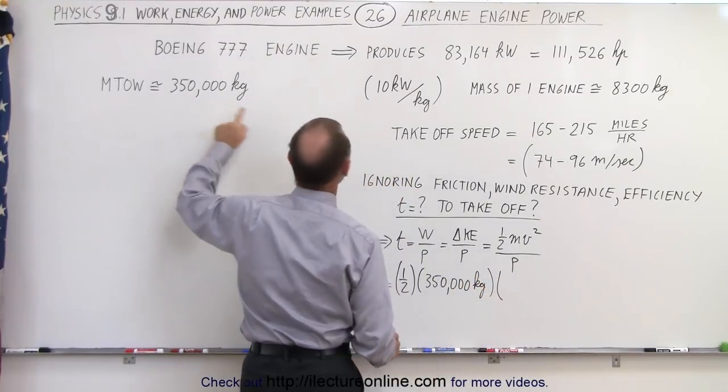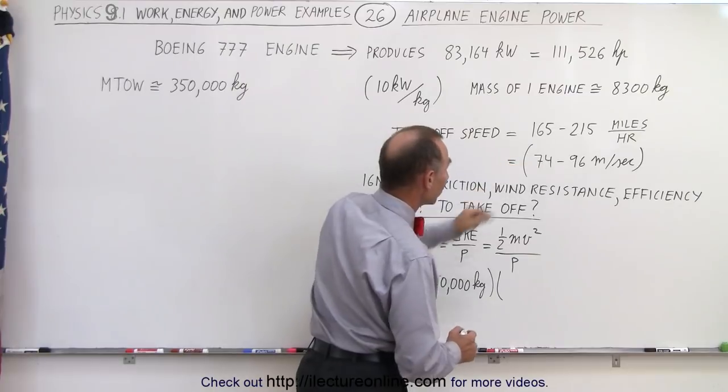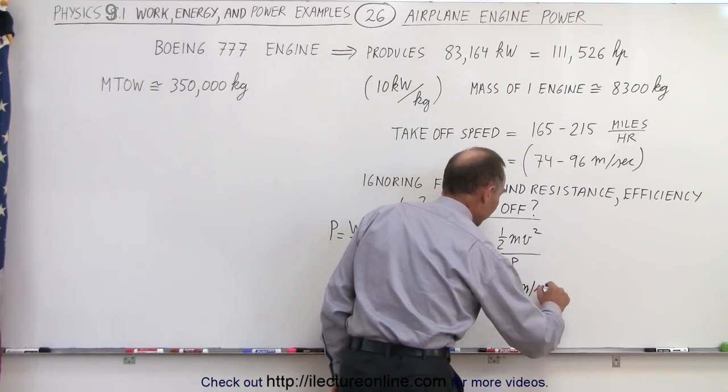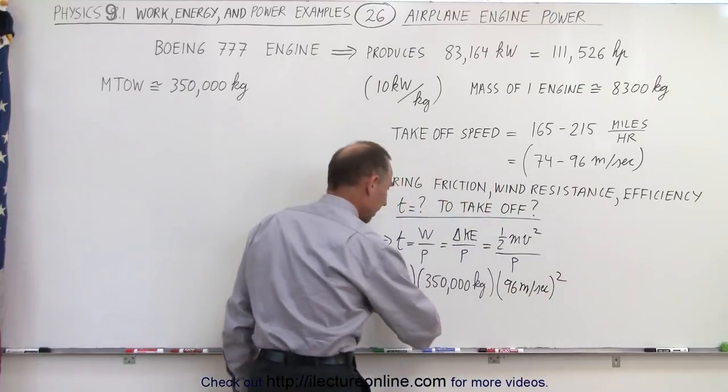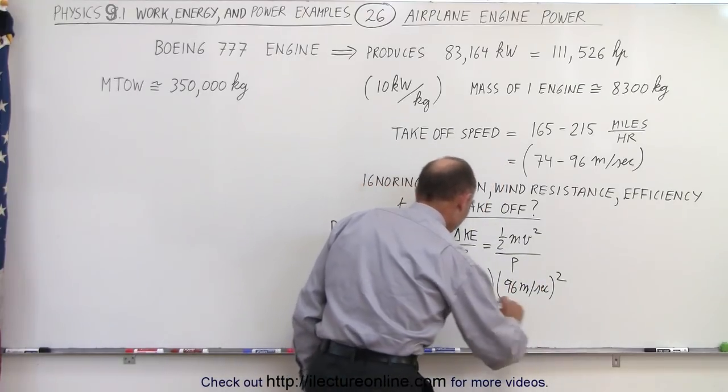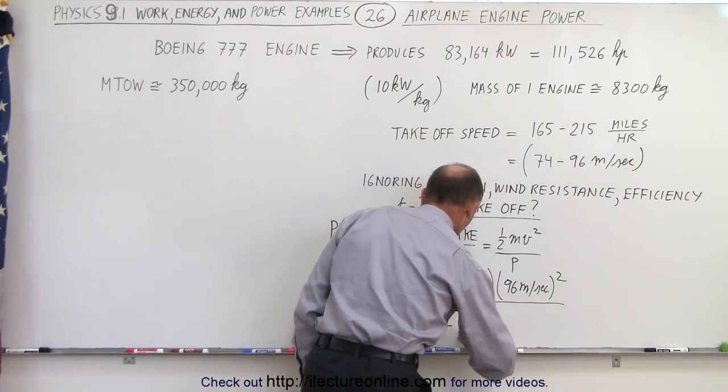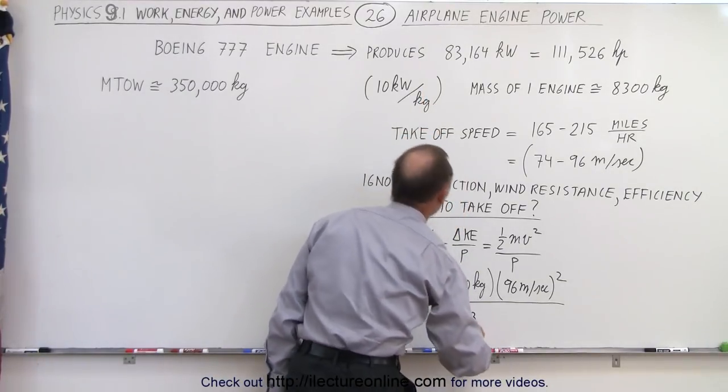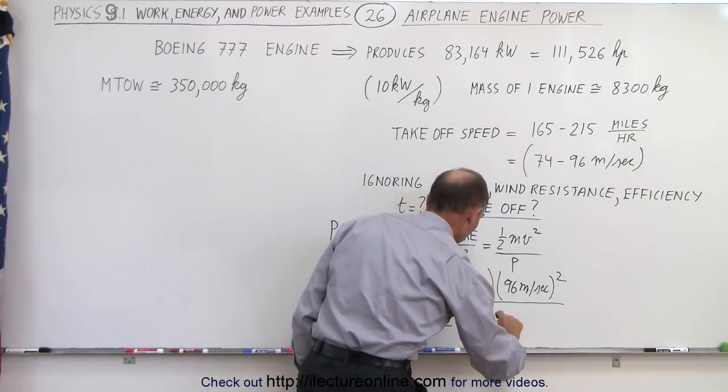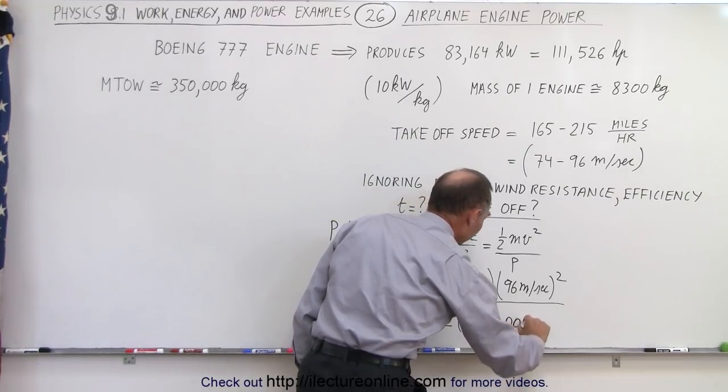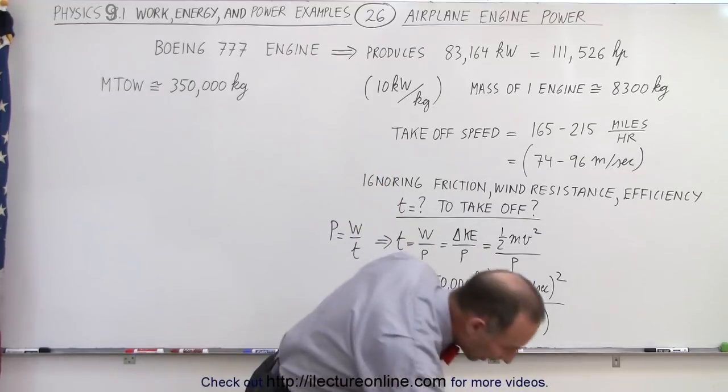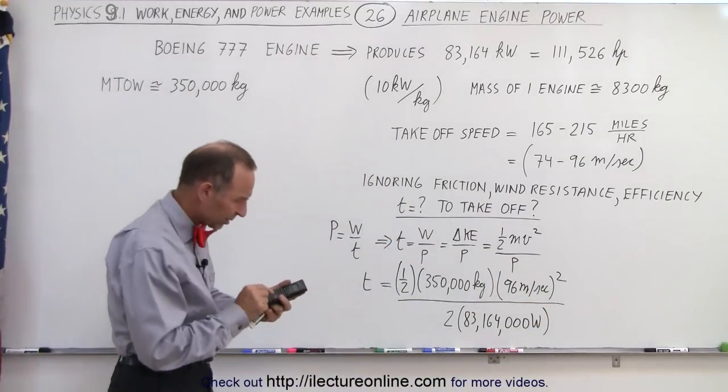The maximum velocity required in that case would be 96 meters per second, so that would be 96 meters per second, and we have to square that. So that's the kinetic energy gained divided by the power. There's two engines, two times the power of 83,164,000 watts, so we have to convert to watts, not kilowatts. Let's see what we get when we punch that out into our calculator.